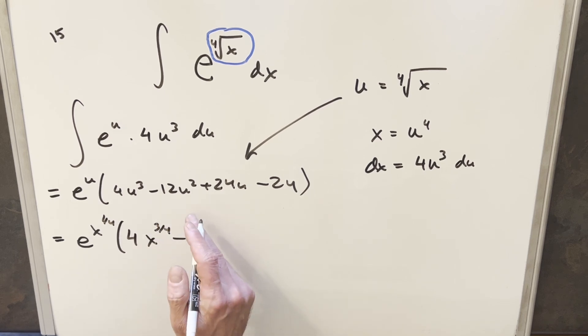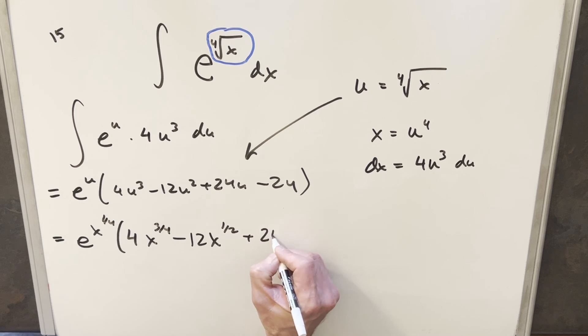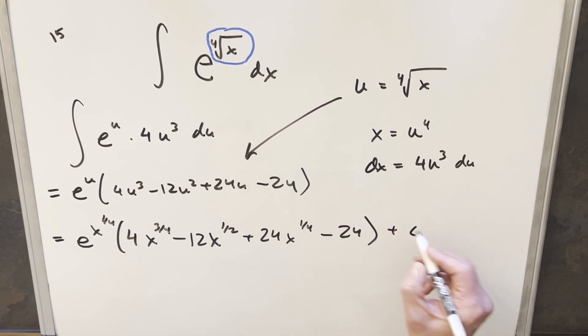Then here, this is going to be x to the two fourths, but we can reduce that and write that as x to the one half. And then here, this is going to be 24x to the one fourth, copy down minus 24, add a plus C, and that's it.